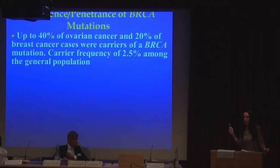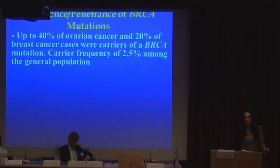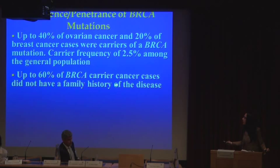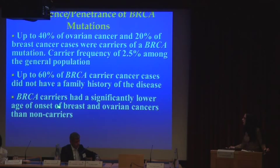The frequency of a BRCA mutation in a given population can reach as high as 2.5 to 3%, meaning that among unaffected individuals in the general population, about 3% carry these mutations. Up to 60% of BRCA carrier cancer cases, in fact, do not have a significant family history of the disease and therefore would not have been identified as being at risk. BRCA carriers have a significantly lower age of onset of breast and ovarian cancer than non-carriers, and the majority of associated cancers are premenopausal.